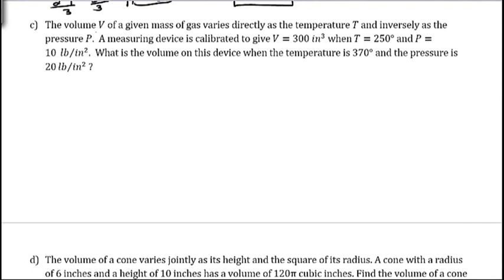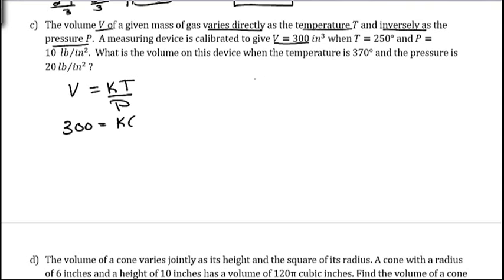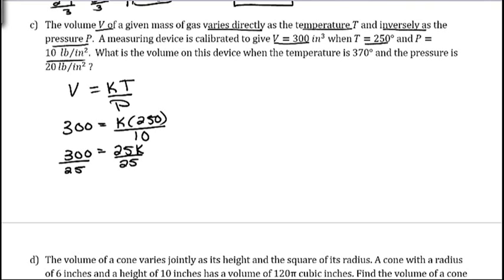The volume V of a given mass varies directly as the temperature T and inversely as the pressure P. So we get the equation V equals KT divided by P. Using the given values, we get 300 equals K times 250 divided by 10. And 250 divided by 10 is 25, so we have 25K. Divide both sides by 25 and we get K equals 12. That gives us the equation V equals 12T divided by P.